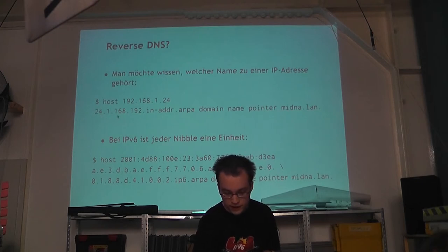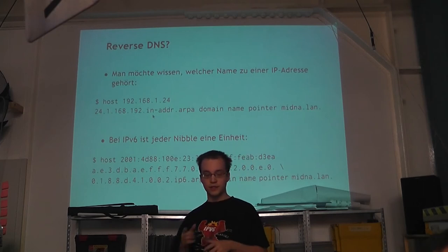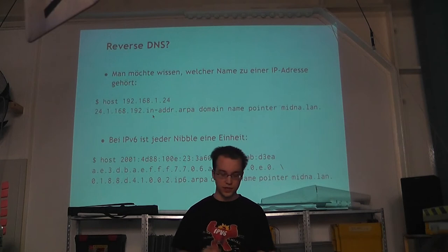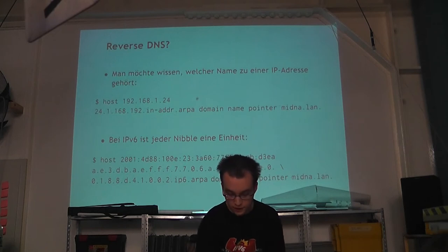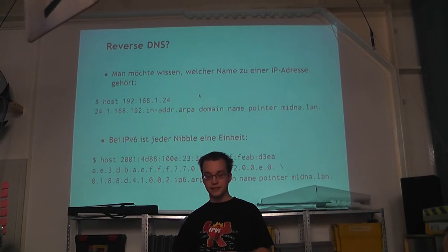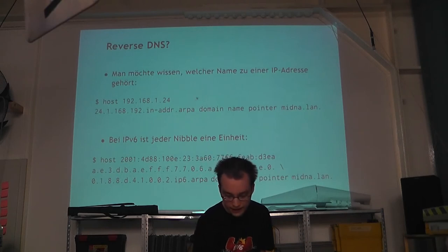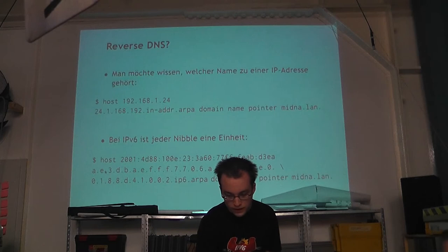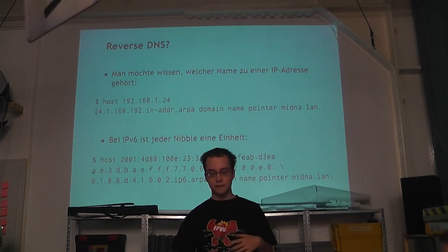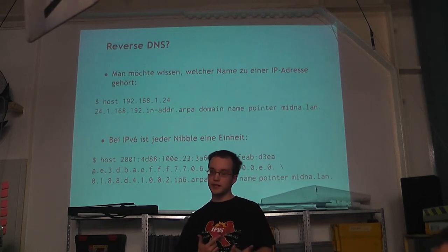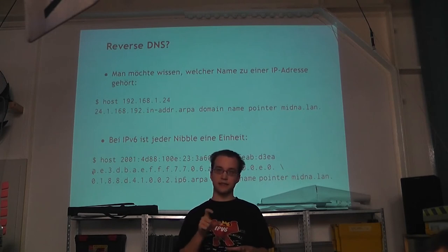So in my case it becomes 24.1.168.192, under the zone in-addr.arpa. The 'in' stands for Internet and 'addr' for Address. For IPv6, the whole thing works almost the same way — the principle remains the same. You pass an IPv6 address and it is resolved under .ip6.arpa. However, here it's not reversed at each colon, but at each so-called nibble.